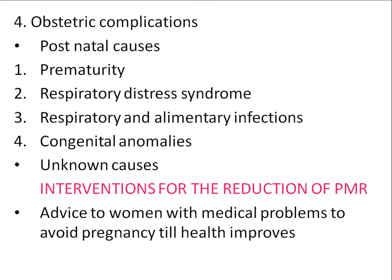Interventions to reduce perinatal mortality: advise women with medical problems to avoid pregnancy during active illness. If the mother has tuberculosis, she should be cured first. Treat any existing infections, hypertension, and diabetes — the mother should be followed properly with antihypertensive and anti-diabetic treatment. If she has cardiovascular anomalies, avoid pregnancy in such mothers.